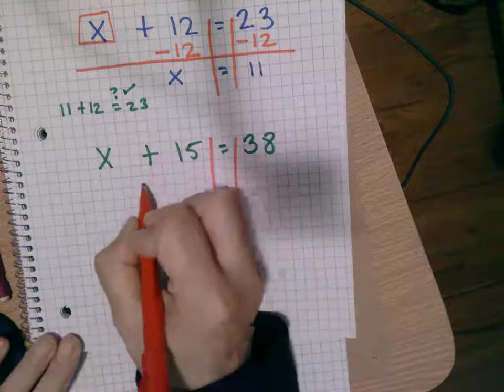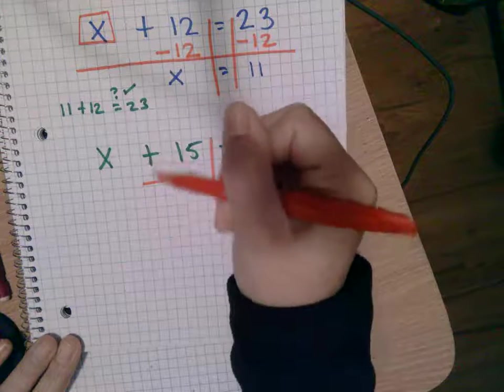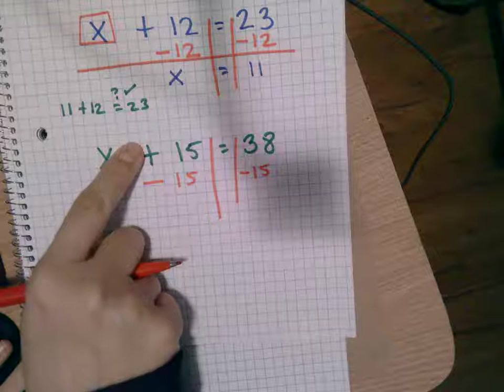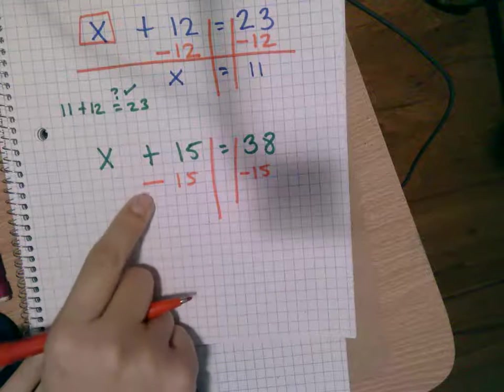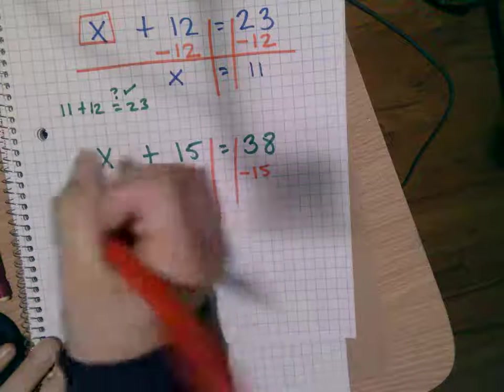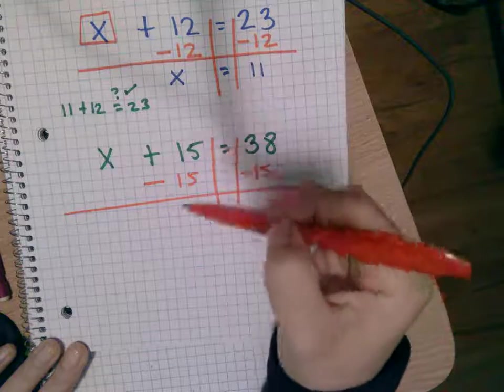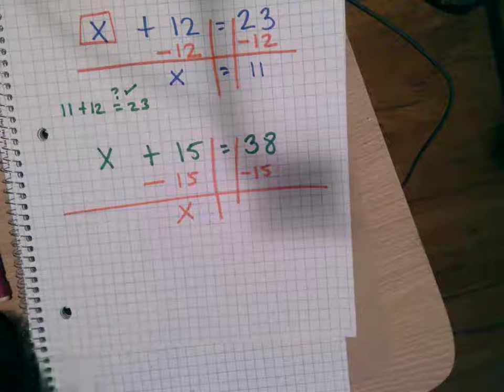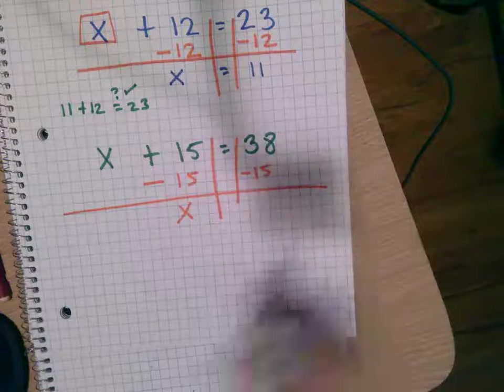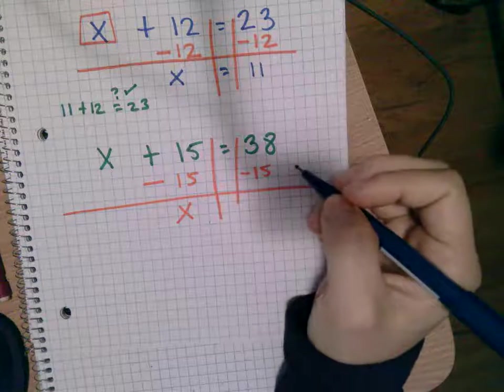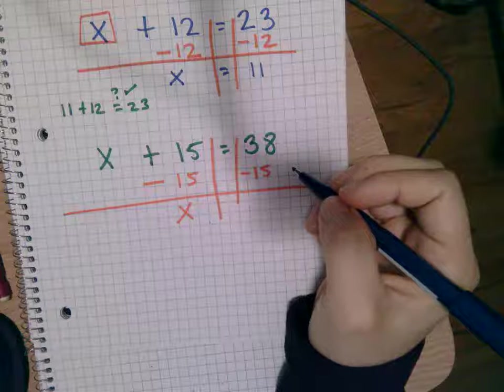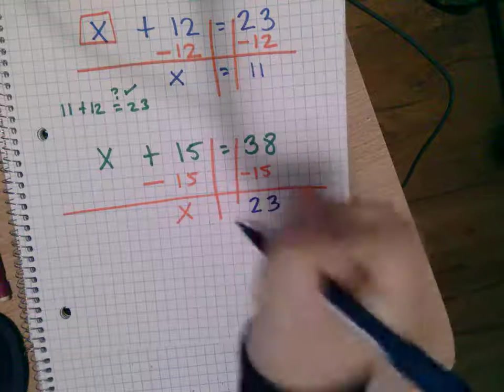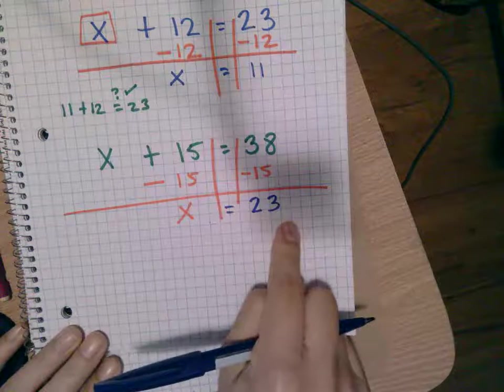So if it says plus 15, what are you going to do? Minus 15. So basically what you do is you do the opposite operation. So we're going to do minus 15. If it says to add 15, the original problem, you're going to subtract 15. On this side, you're just left with x all by itself. Now on this side, you got to do the math. What's 38 minus 15? 23.